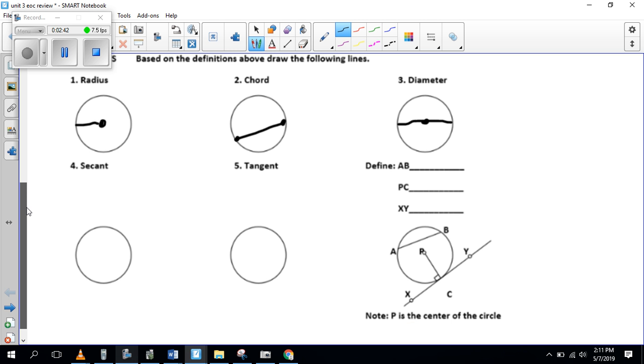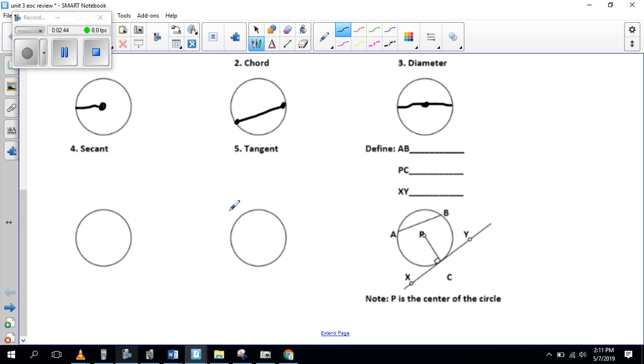And then let's look down here. Well, there's nothing there. Oh, secant. Oh, secant goes through the circle. Sorry. Tangent is found on the outside, and it only touches one time. My picture probably doesn't look like it, but it only touches one time.